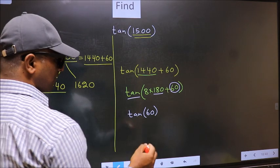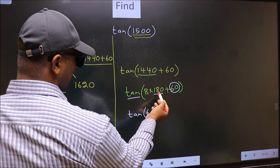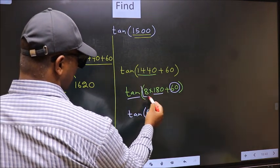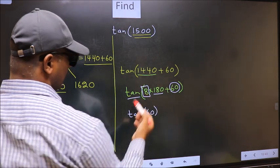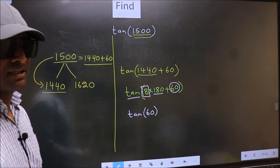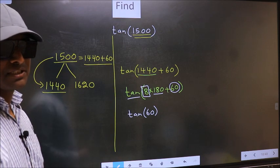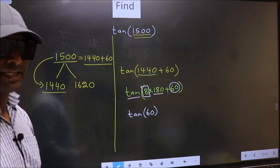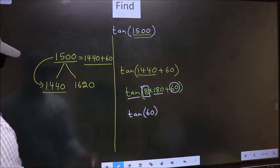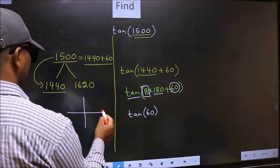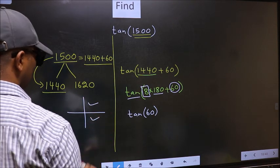And all the even multiples of 180 lie in either the first or the fourth quadrant. So now to select the quadrant, we should look at this symbol. Here we have plus, that means the angle lies in the first quadrant.